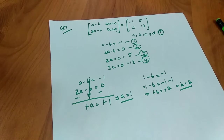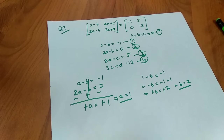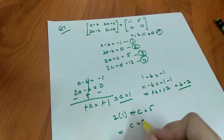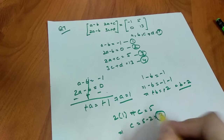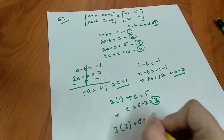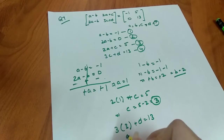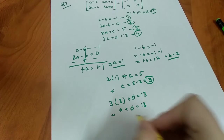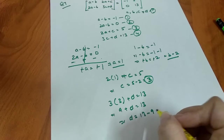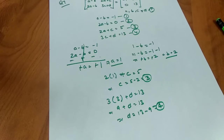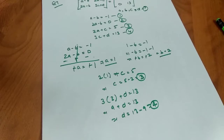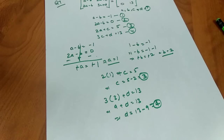Now substituting a equals 1 into the third equation: 2(1) plus c equals 5, so c equals 3. Substituting c equals 3 into the fourth equation: 3(3) plus d equals 13, so 9 plus d equals 13, giving d equals 4. So our values are a=1, b=2, c=3, d=4 — question number 7 is solved.